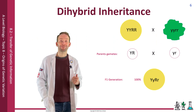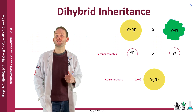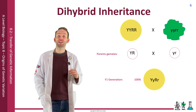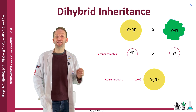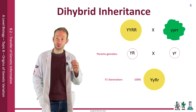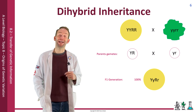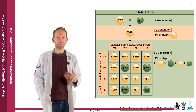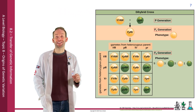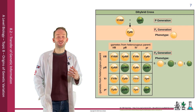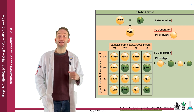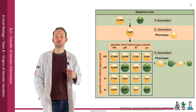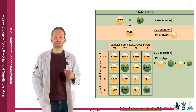If you take pure breeding homozygous parents that express different traits and cross them, all their offspring will be the same. Taking round yellow and wrinkled green: round yellow can only pass on YR gametes, and wrinkled green can only pass on yr. Therefore 100% of the F1 generation are heterozygous but will be round and yellow. Interbreeding that generation gives 16 possible genotype combinations and a 9:3:3:1 phenotype ratio.